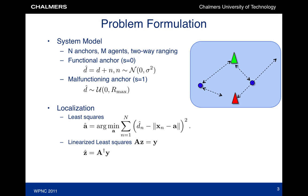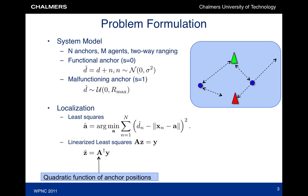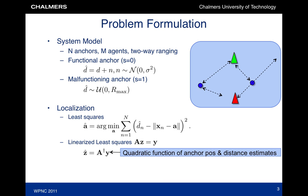We consider least squares and linearized least squares positioning. In the latter algorithm, the variable z contains the unknown position, while a and y are known to the agent and are quadratic functions of the distance estimates and the anchor positions.